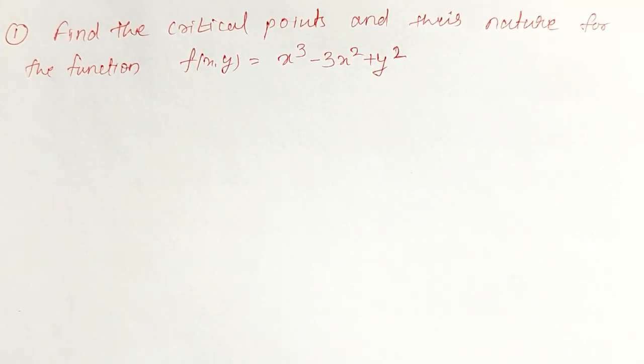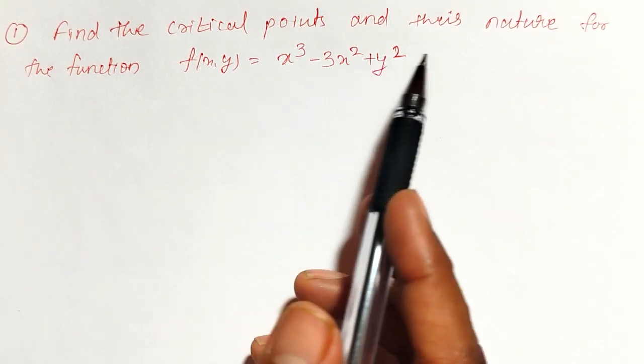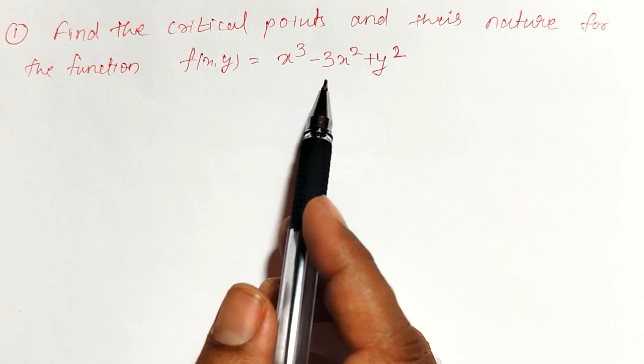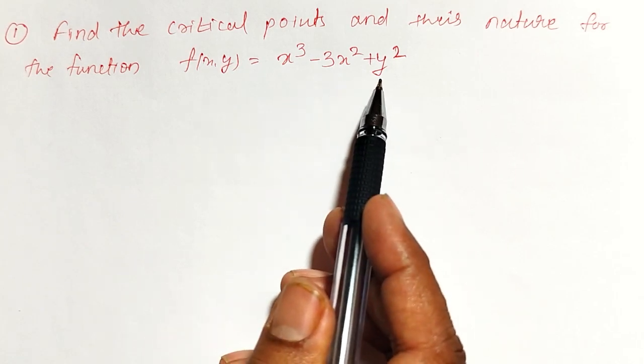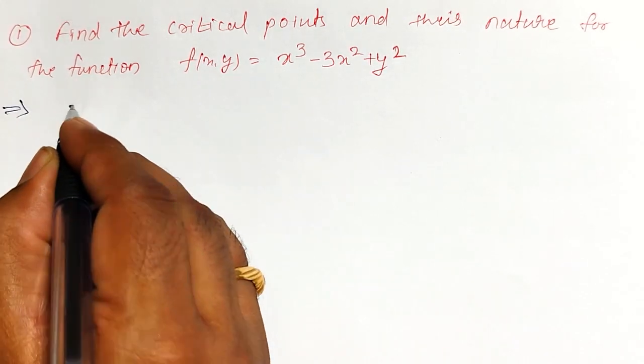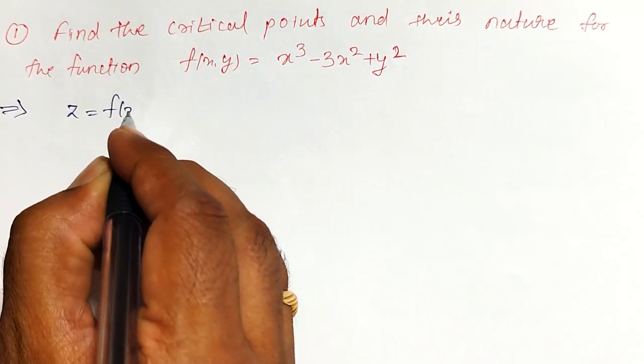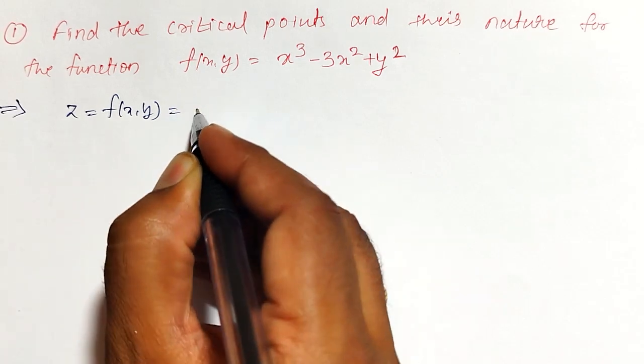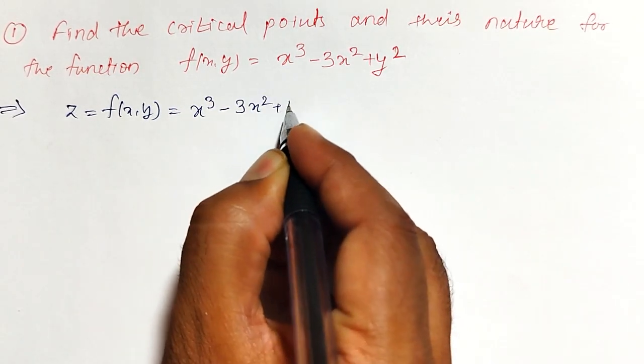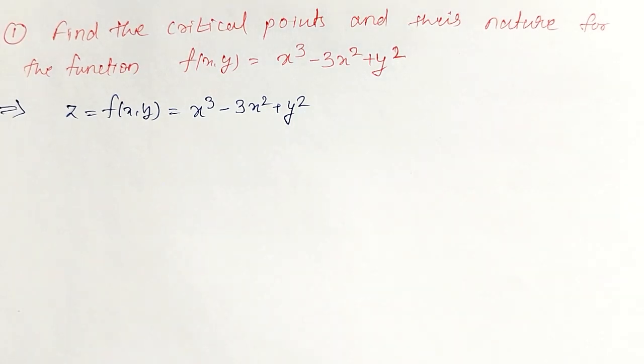Welcome friends, in this video I am going to find the critical points and their nature for the function f of x,y equal to x cube minus 3x square plus y square as a function of two variables.